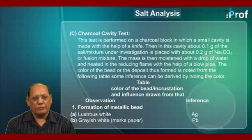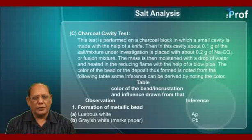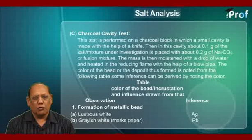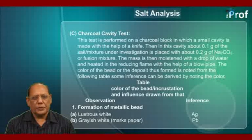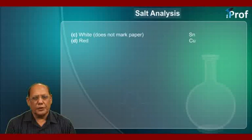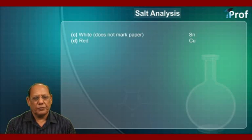Number 1: Formation of metallic bead. A. If it is lustrous white, then silver is present. B. Grayish white that marks on the paper, then lead is present. C. White but does not mark paper, tin is present. D. Red, copper is present.